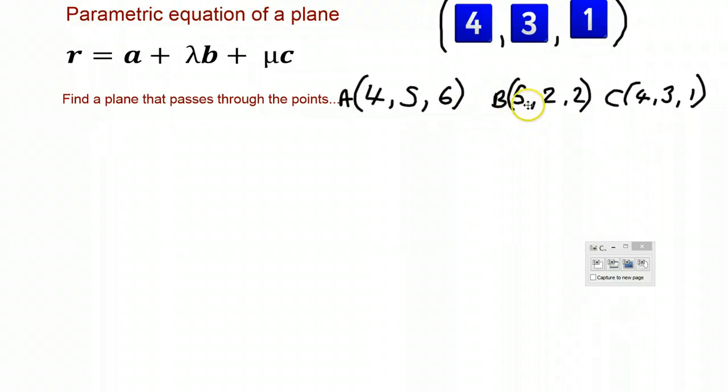If I come over here and I'm going to do B take away A, it would be the direction AB. So the direction AB is going to be 1, minus 3, minus 4.